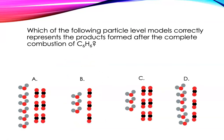Let's work through another multiple choice problem: which of the following particle level models correctly represents the products formed after the complete combustion of C6H6, which is commonly known as benzene, but you don't need to know that to solve this problem. So we have C6H6, so that's telling me I'm expecting six CO2s for three H2Os, so they need to be in this two to one kind of ratio.